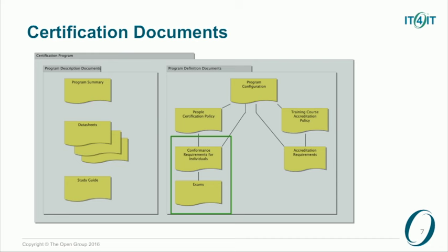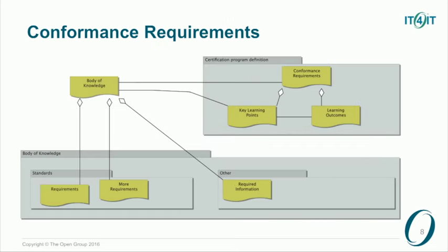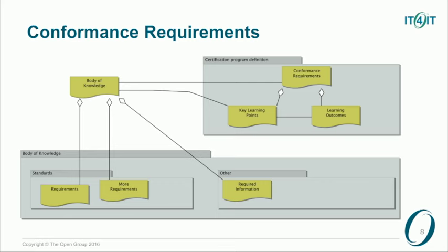I'll talk a little bit about how we put the program together. The Open Group has a certification framework, so we follow a common methodology through all of our programs. That allows us to focus on the particular topic at hand. We focused on building conformance requirements and exams specifically for the body of knowledge identified. We map conformance requirements to standards or other documents — for example, as we go to level two, it might include some white papers and scenarios we're developing for IT4IT. Based on a body of knowledge, we draw up a set of conformance requirements, breaking down the body of knowledge into what we call key learning points and then learning outcomes.